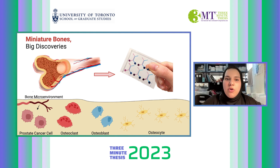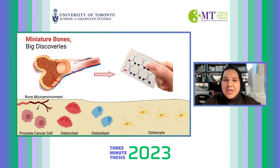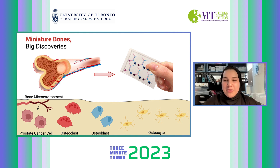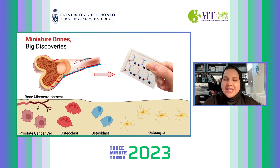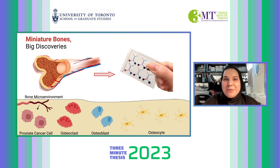This work allows us to go from trying to understand that complex bone that we see on the left there to using that small chip on the right. By developing a more accurate model, we can begin to test new therapies, accelerate drug trials, develop more personalized treatments, and ultimately paint a clearer picture of what is happening at the cellular level.